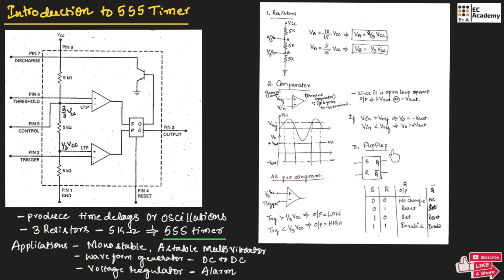Another important component is the SR flip-flop, where S is set and R is reset. When input is applied to set, output is high; when input is applied to reset, output is low. In the truth table, when S=0 and R=0, there is no change; when S=1 and R=1, this is an invalid input.